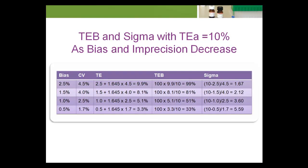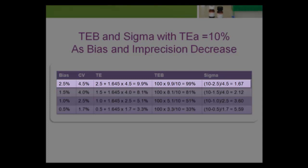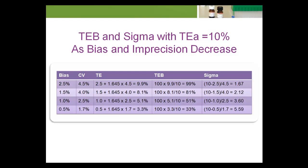We have already shown that sigma values can be used as a guide to the amount of QC effort required to assure that the lab's quality requirements are met. The TEB is a quantity that relates process capability to quality requirements. This table computes both TEB and sigma values, assuming TEA equals 10 percent, for different amounts of test system bias and imprecision. In the first row, the bias is 2.5 percent and the CV is 4.5 percent. In this case, TE is 9.9 percent using the 95 percent limit definition, TEB is 99 percent, and the sigma value is 1.67. Thus, a process where nearly 100 percent of the TEA is consumed by the test system's bias and imprecision is associated with a very poor sigma value.